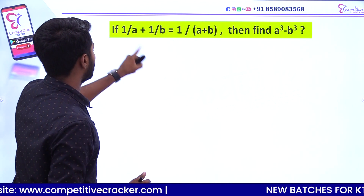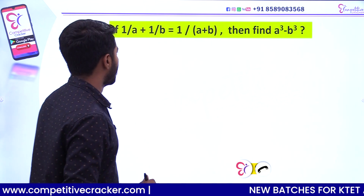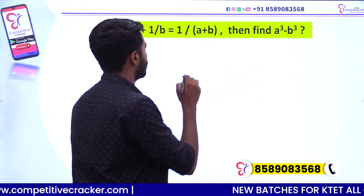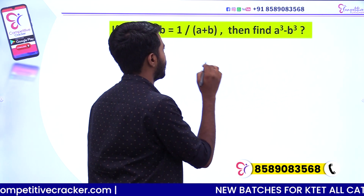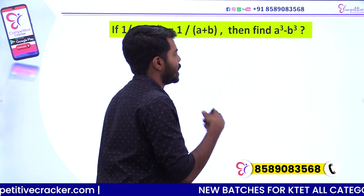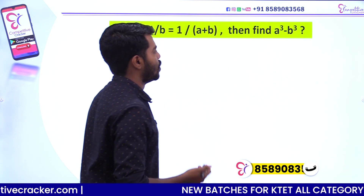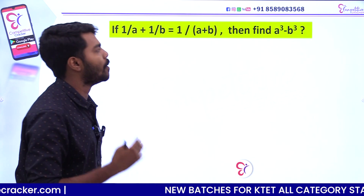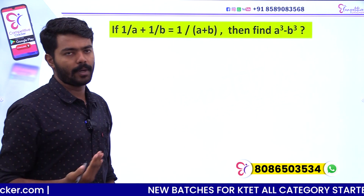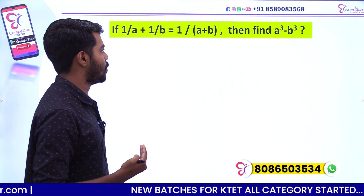If 1 by a plus 1 by b is equal to 1 by a plus b, then find the value of a cube minus b cube. A cube minus b cube is the value.